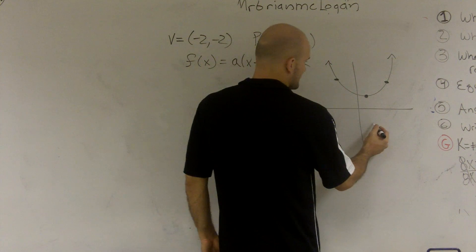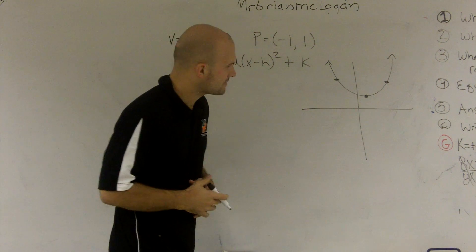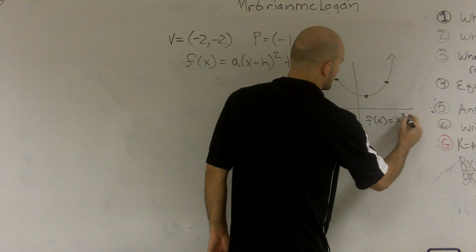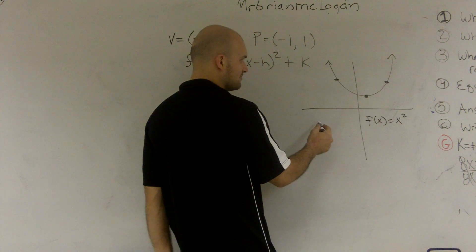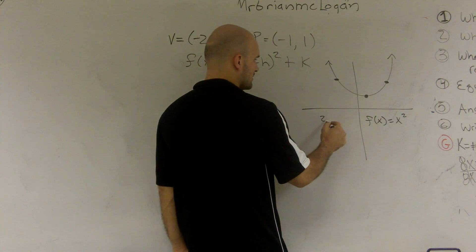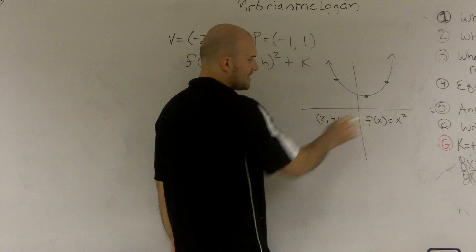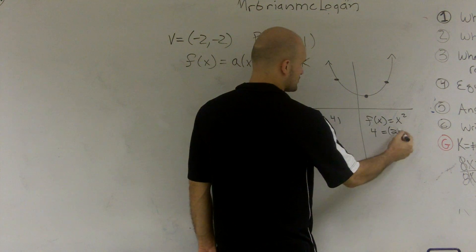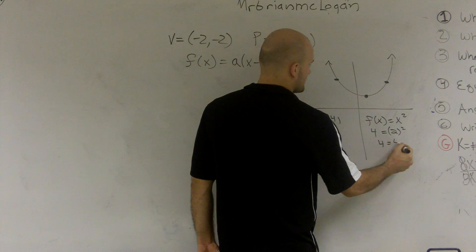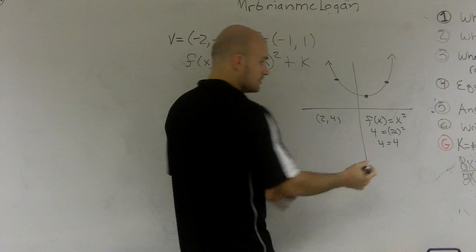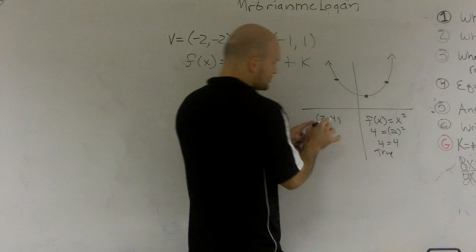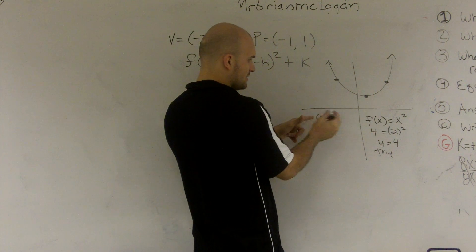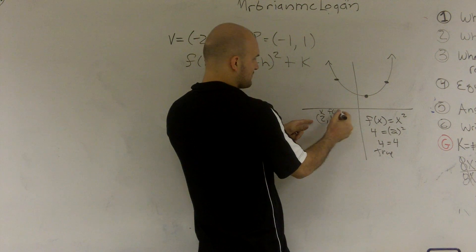Let's say if I did f of x equals x squared, and I said, is the point 2 comma 4 on that graph? Well, you plug in 4 for f of x equals 2 squared. Since that's true, right, my point 2, 4 is on my graph, right? So you plug in this for your x and this for your f of x.